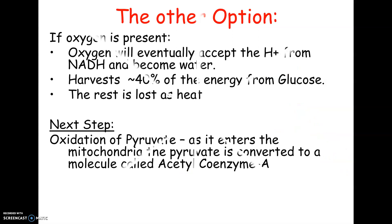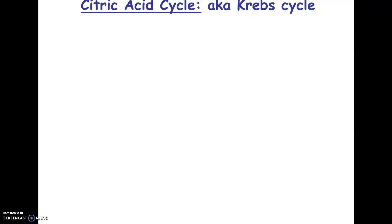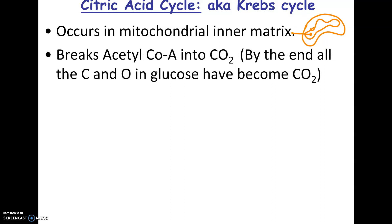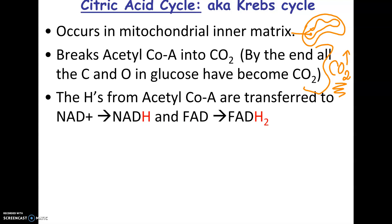So citric acid cycle is our next major step, and this is going to occur in the matrix of the mitochondria. The matrix of the mitochondria is this middle part. If you think of the mitochondria as a double membrane, like a balloon blown up inside another balloon, the middle of that second balloon, that would be the matrix. And so this is a series of steps. It starts with acetyl-coenzyme A, which came from the pyruvate, and it basically breaks all that into CO2. So by the end of the Krebs cycle, all the oxygen and all the carbon from glucose have become CO2, and that's going to get released as a waste product.